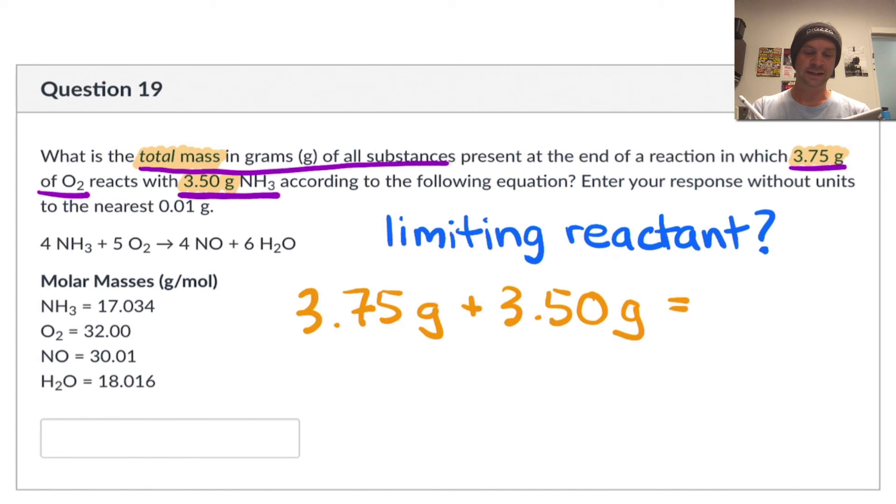So the total mass at the end of the reaction, not having to worry about any specific masses of any particular substance, that's just the sum of these two, and that's going to come out to 7.25 grams. And so this is a bit of a thinker, a bit of a tricky problem, but it comes down to just applying conservation of mass so that we don't even need to worry about this limiting reactant problem. We could do that problem, and in fact we would arrive at the same answer, 7.25 grams, if we were being particularly careful.